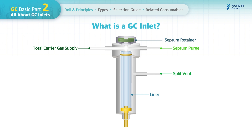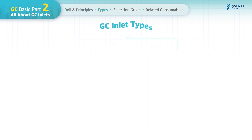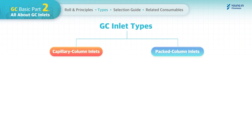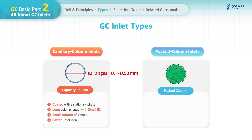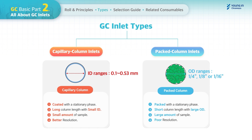Other consumables may be added depending on the manufacturer or inlet type. GC inlets are commonly categorized into two types: capillary column inlets and packed column inlets. Capillary column inlets utilize a capillary column with specific inner diameter ranges, while packed column inlets utilize a packed column with preferred outer diameter ranges.